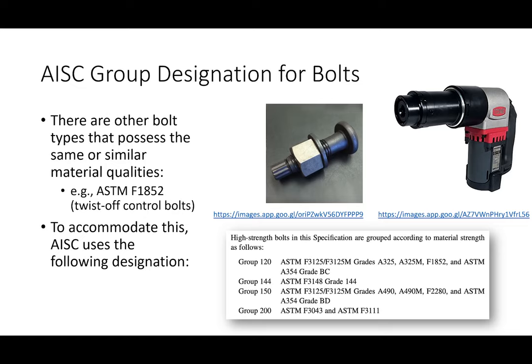This is a big change from the last spec because it used to be just Group A and Group B; now there are multiple groups. So if you're on a construction site and ask somebody where the Group 120 bolts are, they're going to look at you strangely because there's no such thing as a Group 120 bolt. Instead, they've taken a number of different bolt types that all have similar material properties and lumped them into this specification classification. The group numbers like Group 120, Group 150 — that's new from the specification.